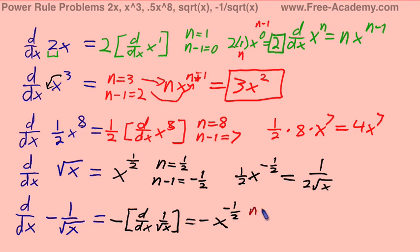So our n equals negative one-half, n minus 1 equals negative three-halves. Putting this all together, we get a negative times a negative one-half, positive one-half, times x to the negative three-halves, which we can put together as 1 over 2 square root of x to the third.